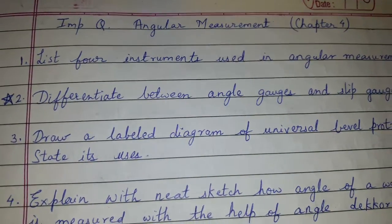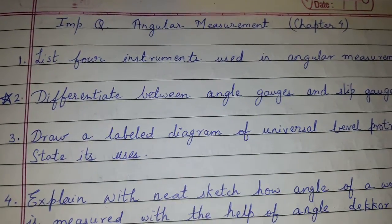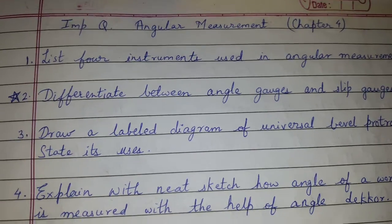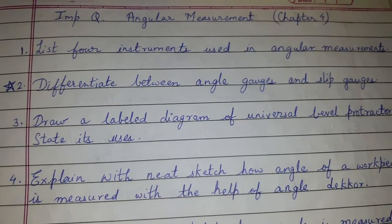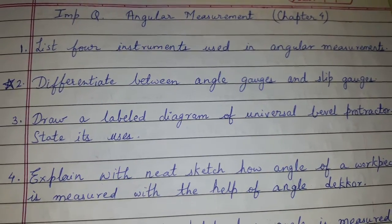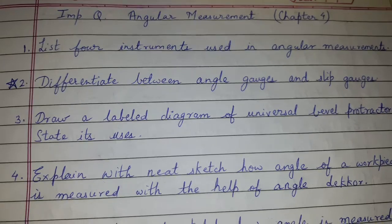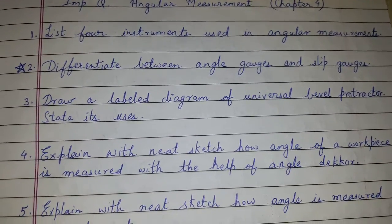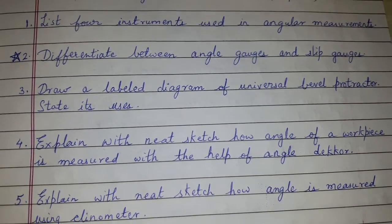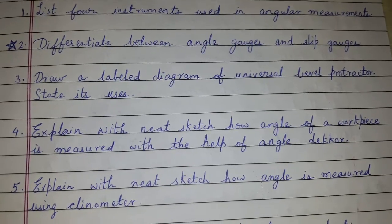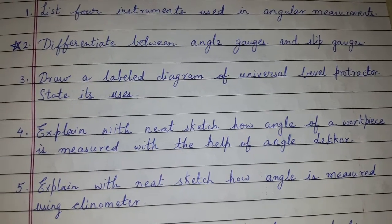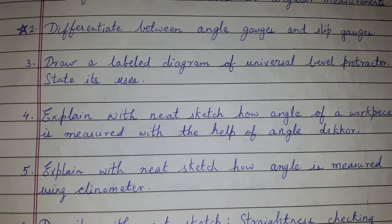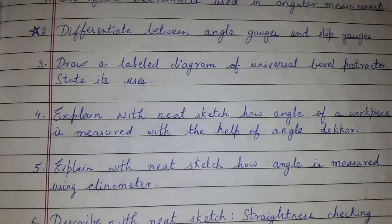Today's topic of discussion is important questions from Chapter 4 on angular measurement. The list includes: instruments used in angular measurements, differentiate between angle gauges and slip gauges, draw a labelled diagram of the universal bevel protractor, state its uses, and explain with neat sketch.